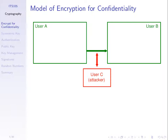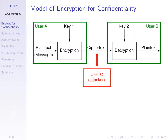So the model for encryption is that user A has a message to send to B. We call that message plaintext — it doesn't have to be text, but that's the name. Before sending, user A takes the plaintext and encrypts it. Encryption is a function that takes two inputs — the plaintext and a key — and produces an output called ciphertext. The encrypted plaintext is called ciphertext.